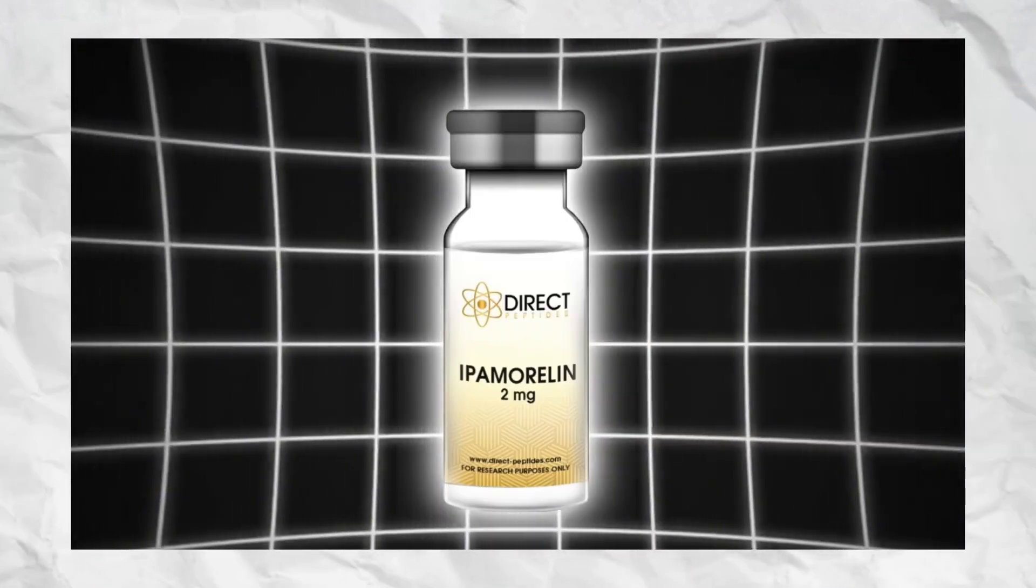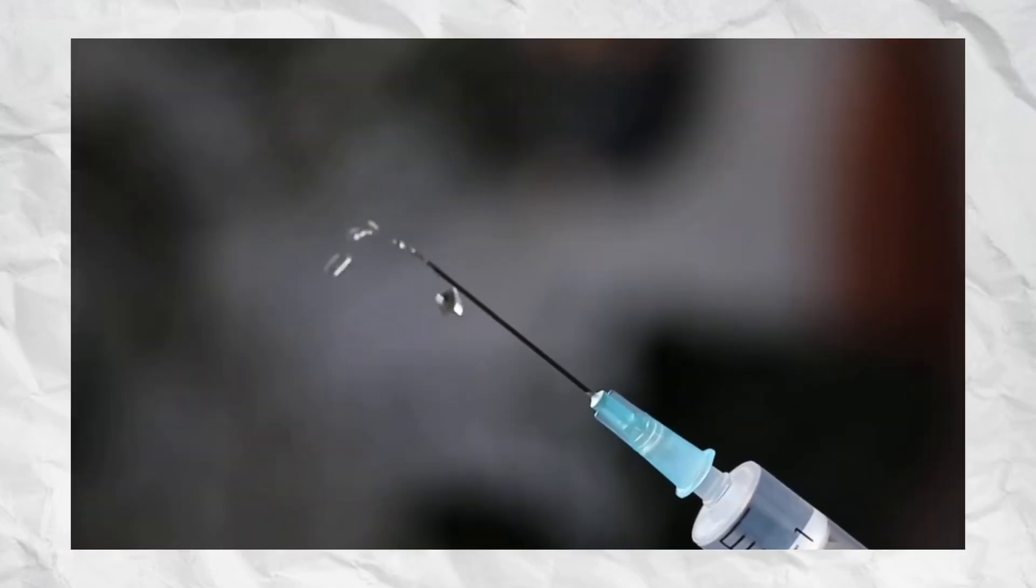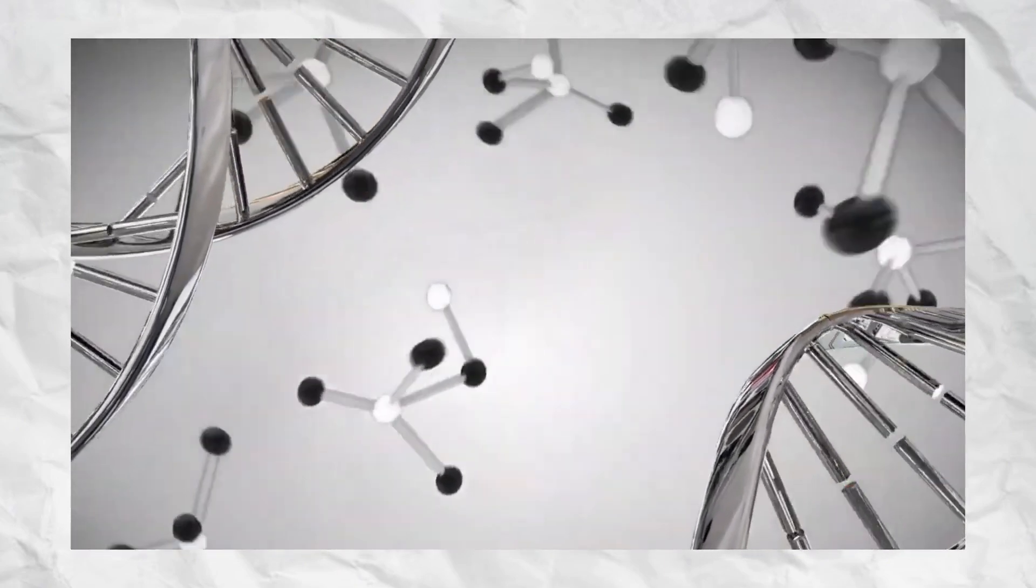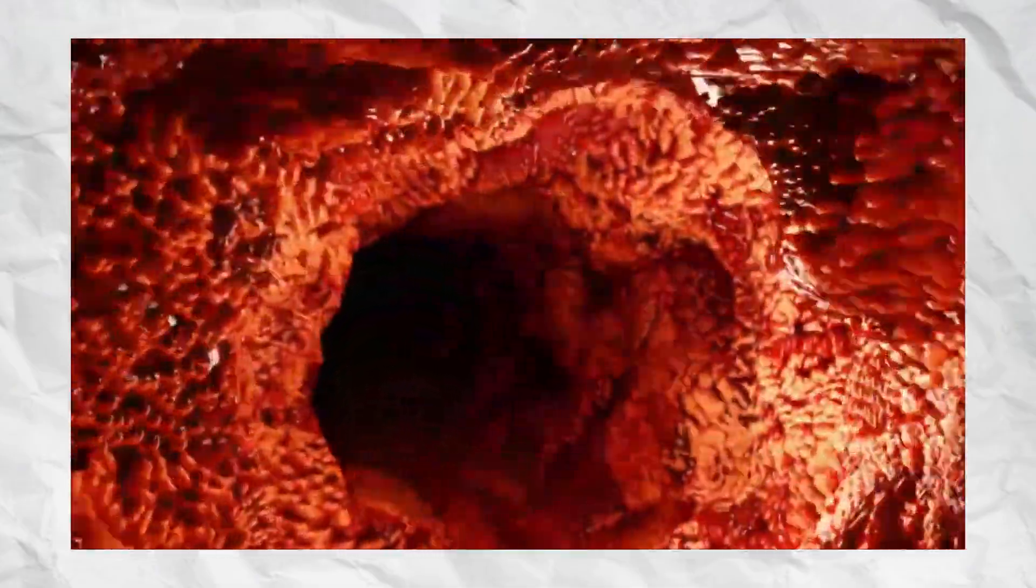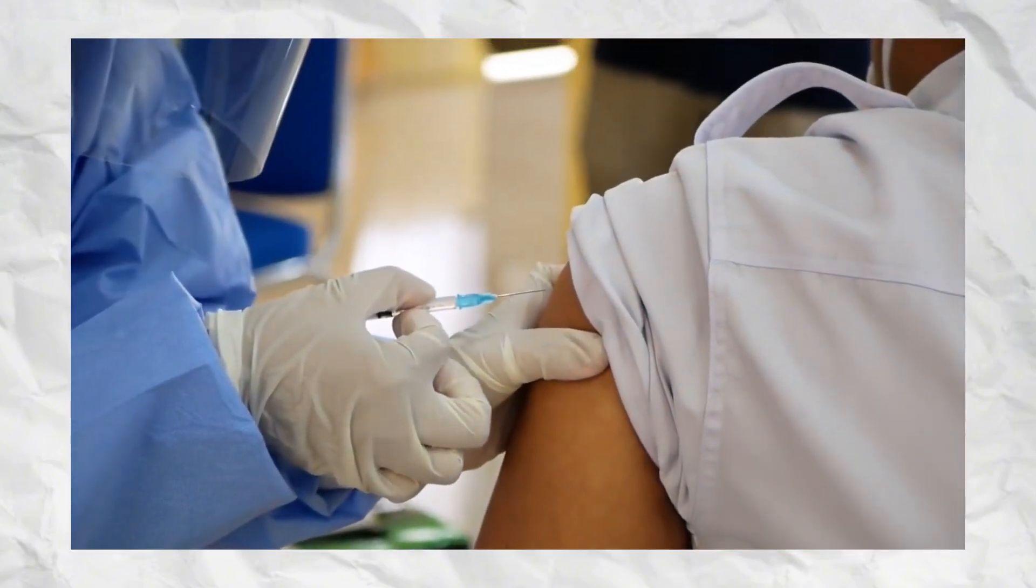Ipamorelin is a selective growth hormone-releasing peptide that works by mimicking ghrelin, the natural hunger hormone, to stimulate the pituitary gland. It triggers the release of growth hormone in controlled bursts while avoiding unwanted increases in cortisol or prolactin, two hormones that can cause fatigue and water retention.